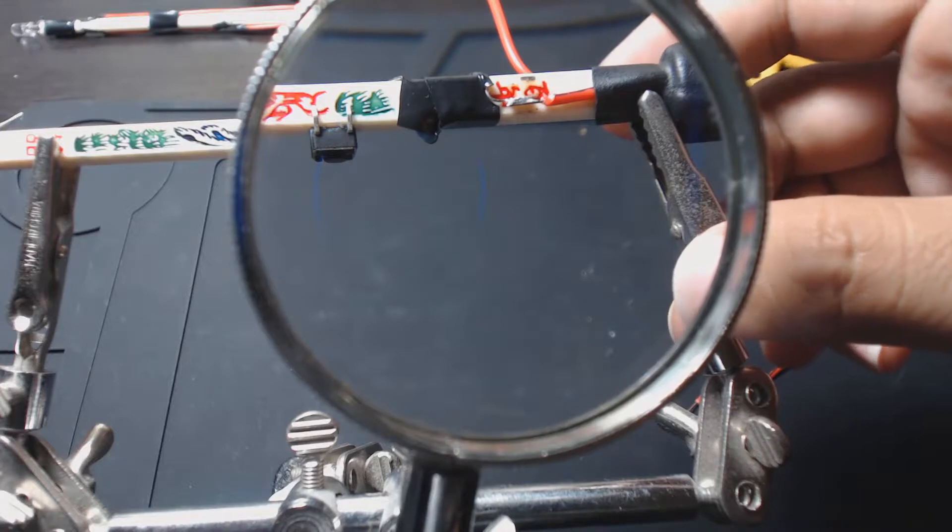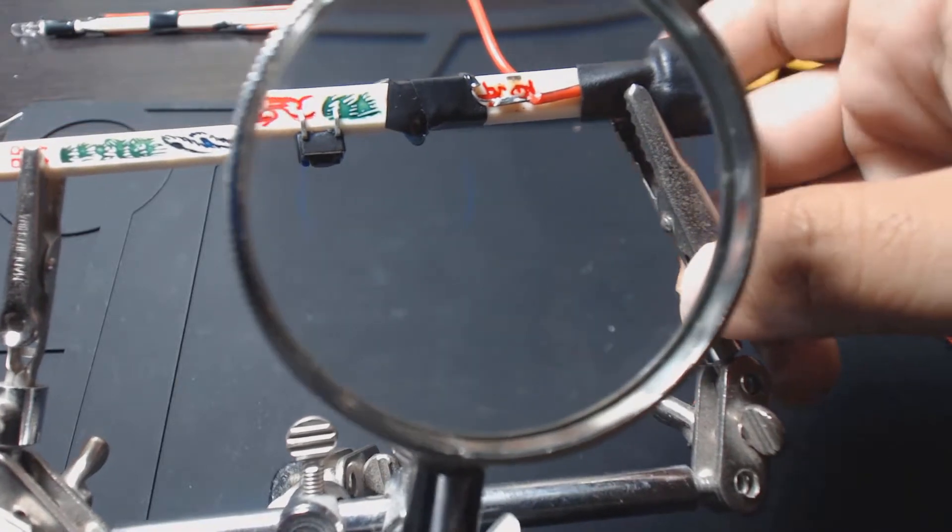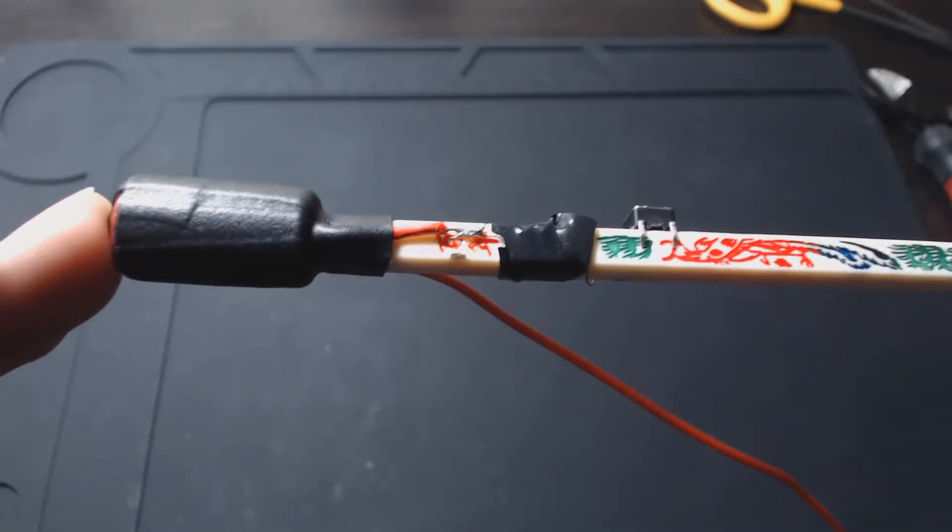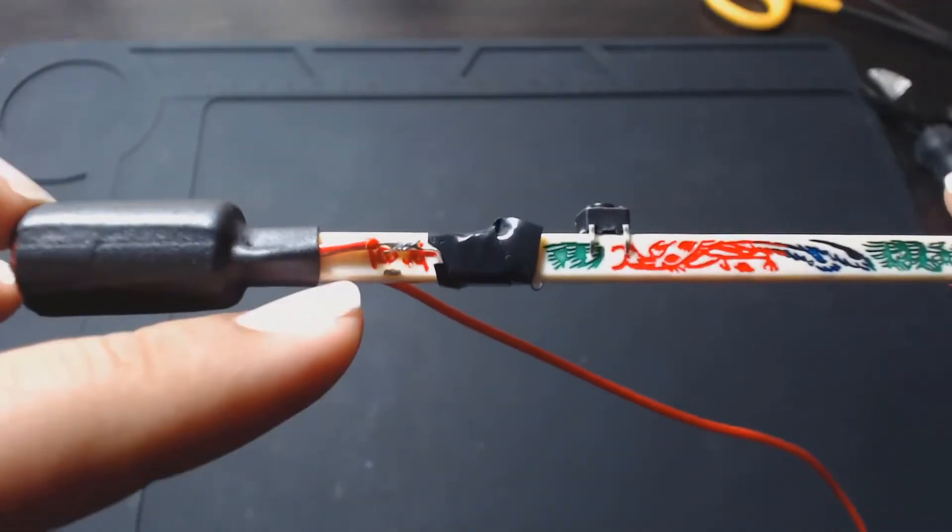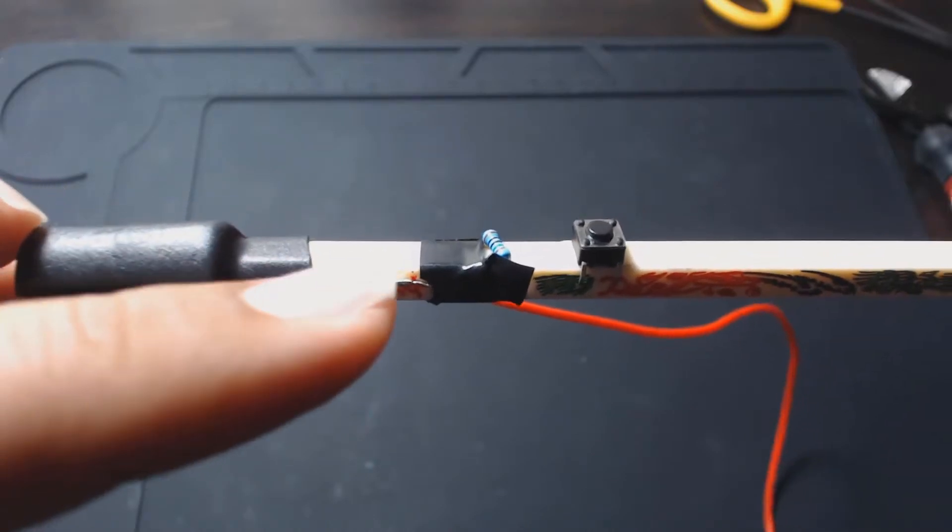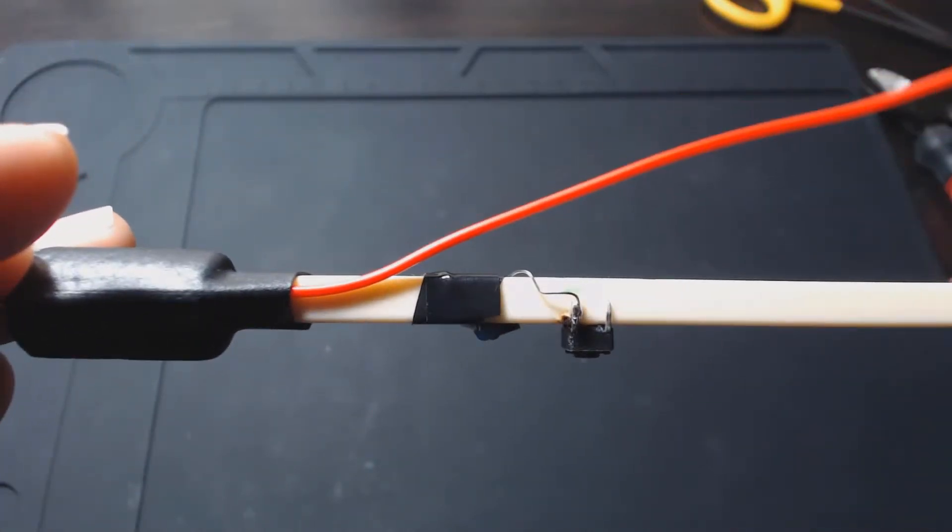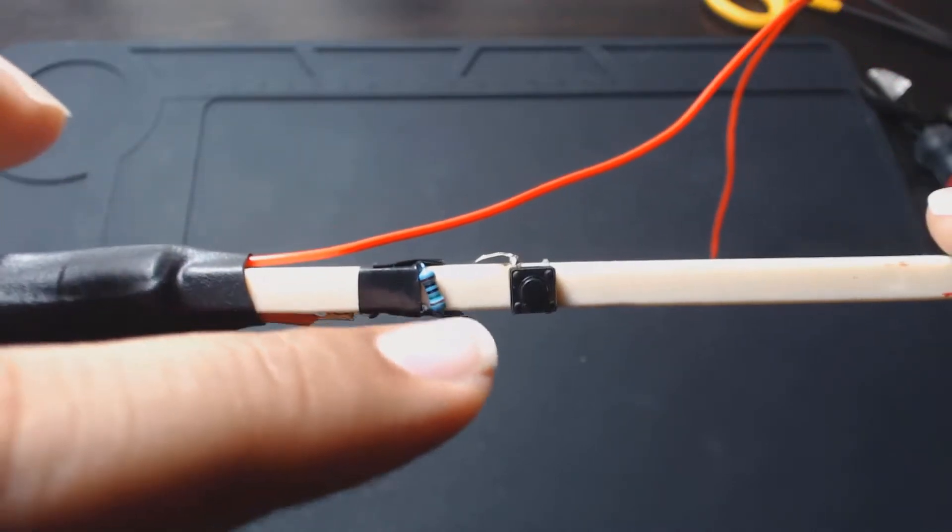Alright, so now that I have my two solder points in place—the negative going to this side of the resistor and the other resistor going to this side of the battery—I'm going to go ahead and use some heat shrink. But like I said, you can use electrical tape. It's fine. You just want to make sure that these two ends don't touch and then you're good.